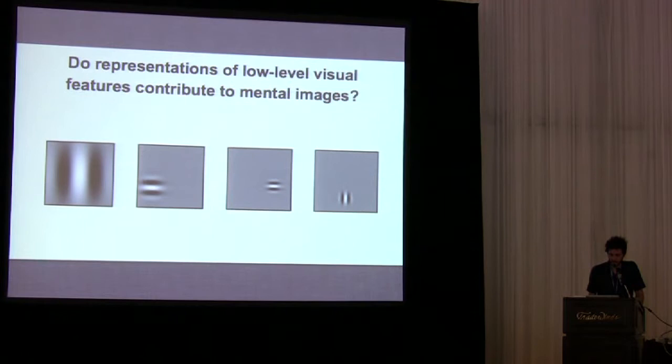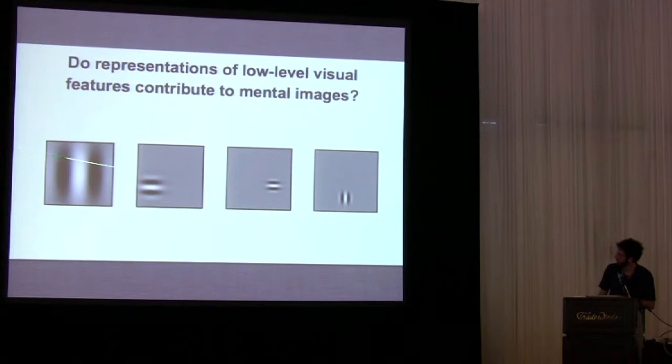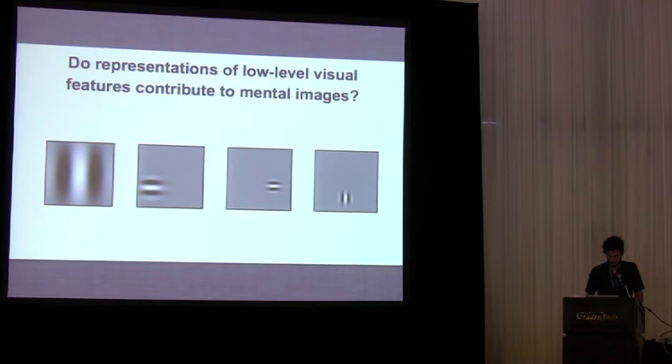The specific question I'm going to focus on is whether or not representations of low-level visual features contribute to mental imagery. By low-level visual features, I basically mean everything that you can summarize with a Gabor filter — I'm showing four of them here. That's retinotopic location, orientation, and spatial frequency.